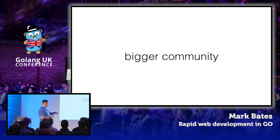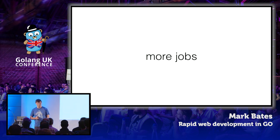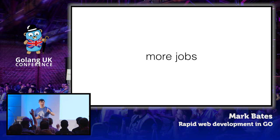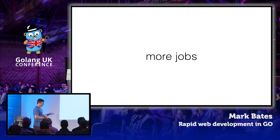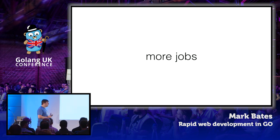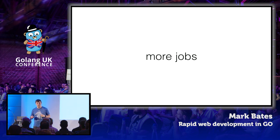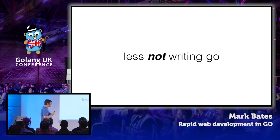What do we get with a bigger community? More information, more diversity, better libraries, better packages — and more jobs. Who here writes Go full-time for their current job? Not enough people. Why? Because we need more Go developers. If we have more Go developers, companies will take more of a risk on Go. And it's not really a risk — Go is amazing. You're not here to be sold on Go. Companies will see all these developers doing amazing things and say 'We should start doing that in-house.' More jobs means less time not writing Go.